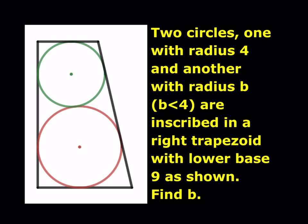We have two circles, one with radius 4 and another with radius b, b being less than 4, inscribed in a right trapezoid with lower base 9 as shown. We're supposed to find b.